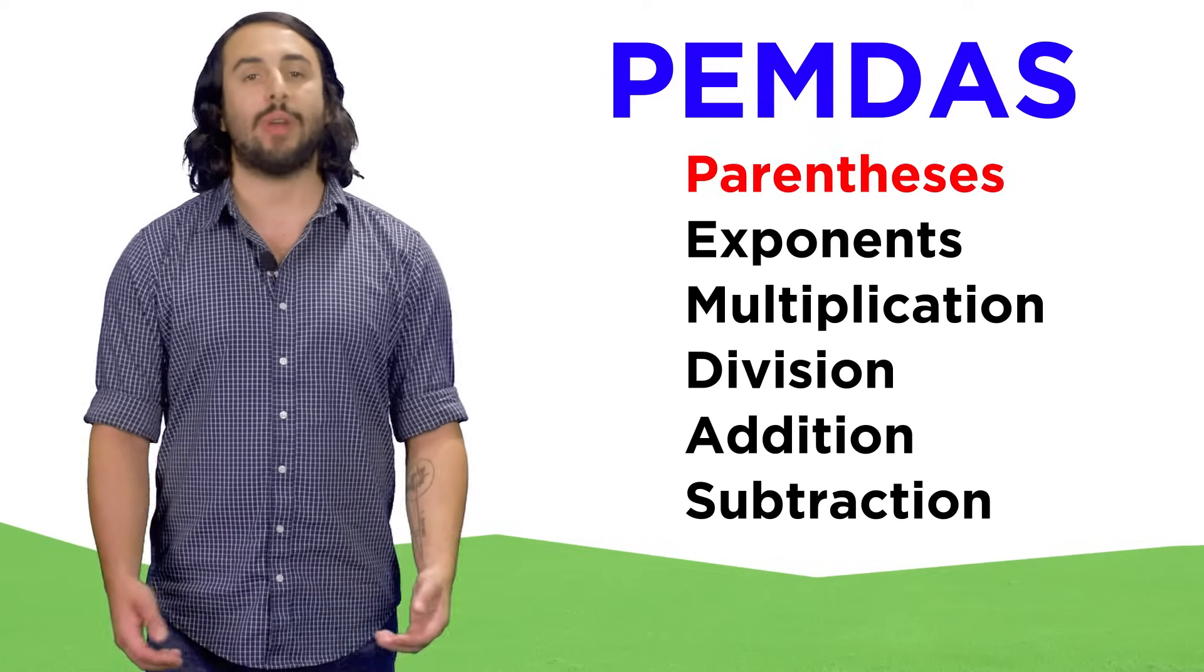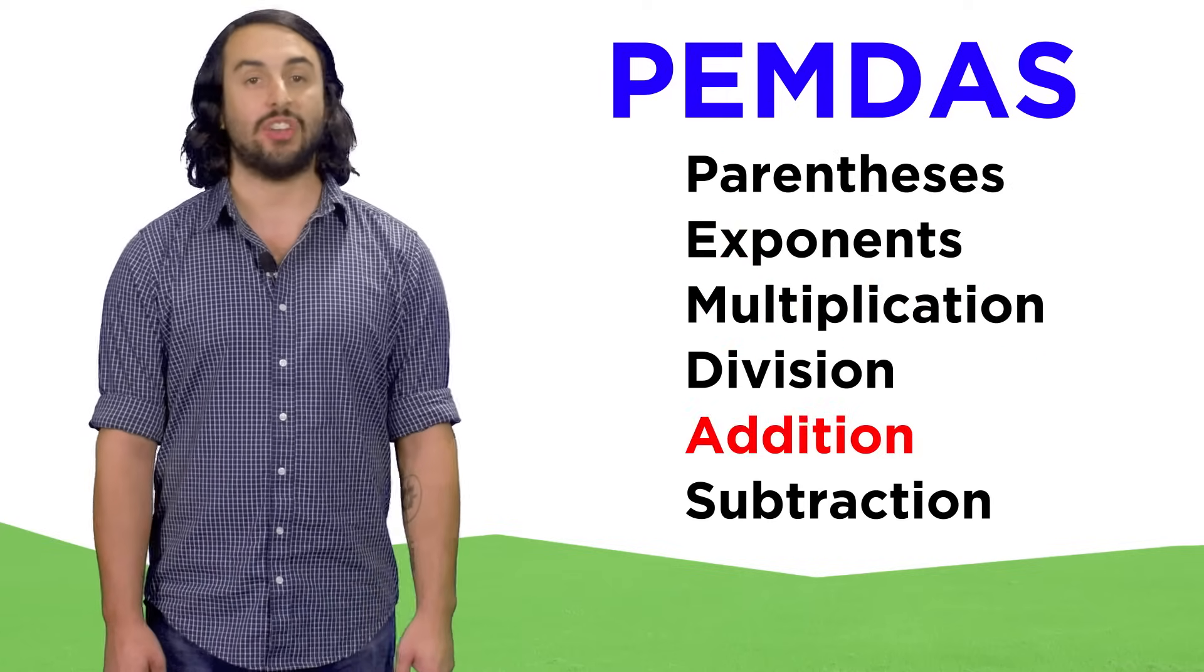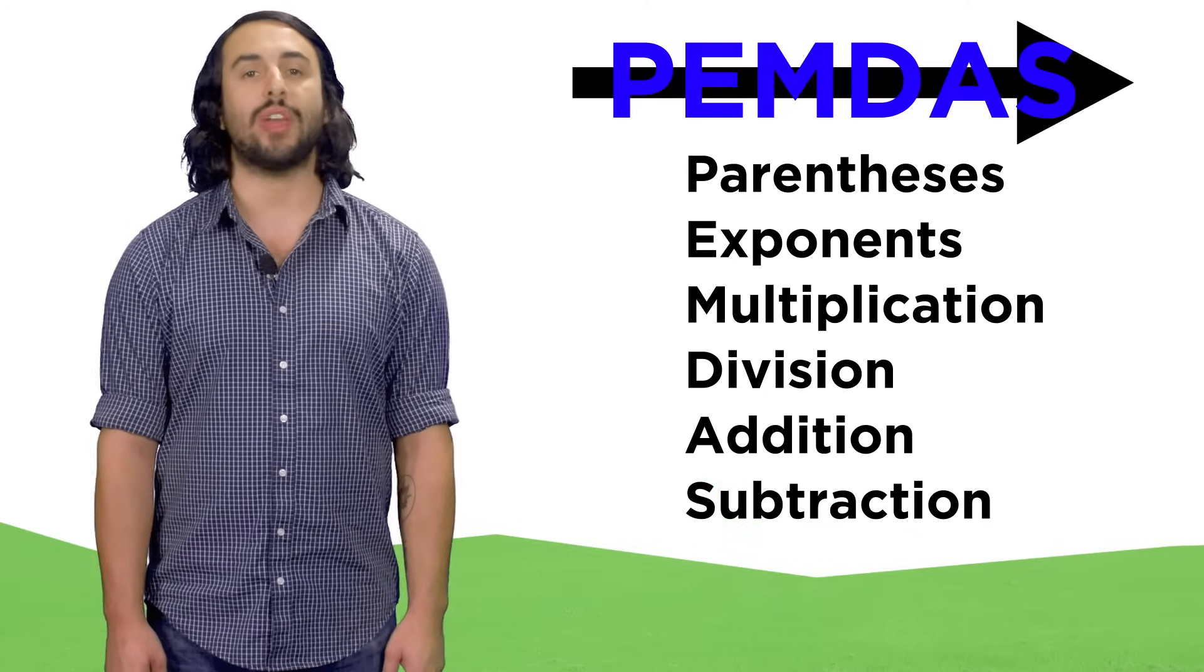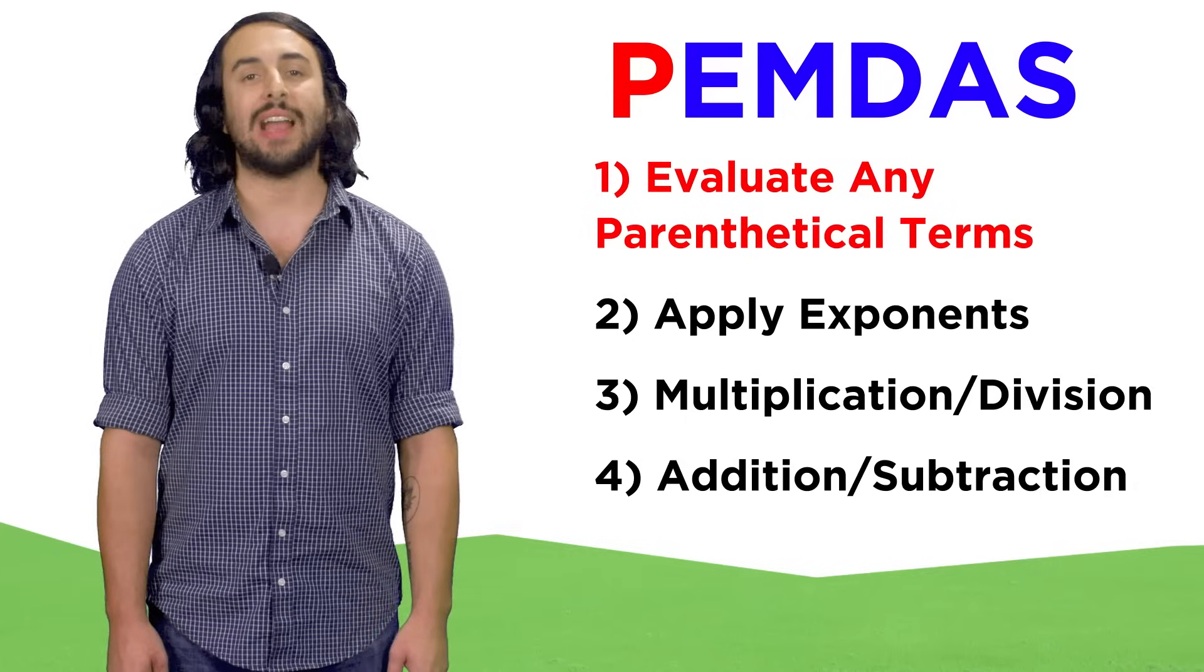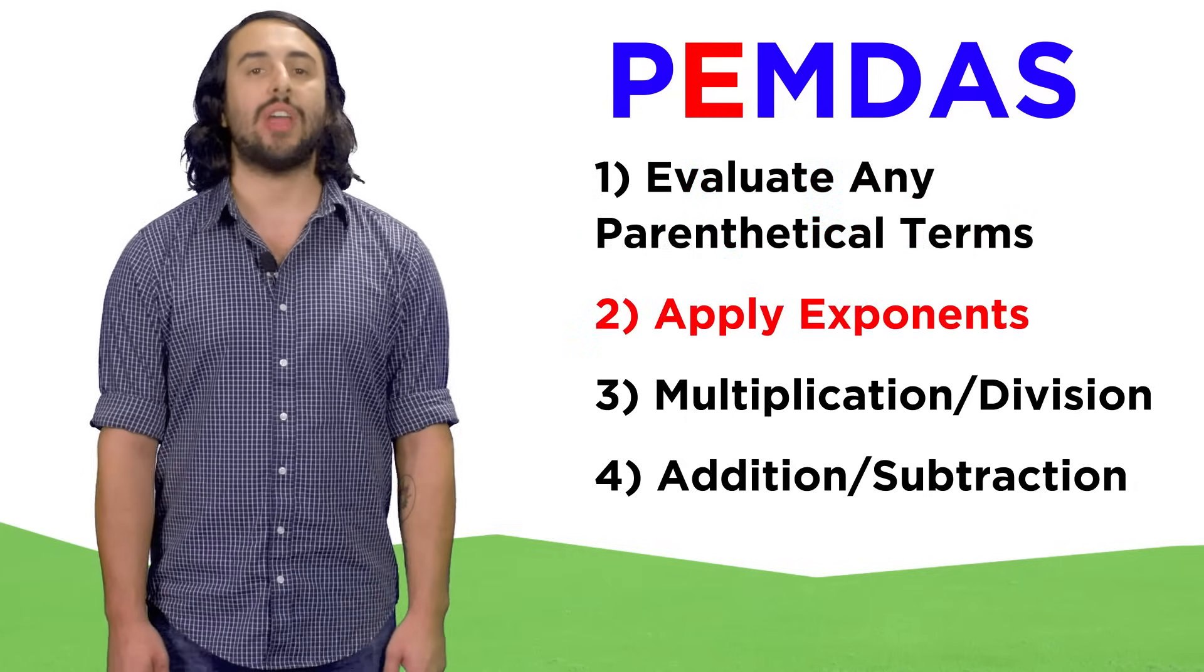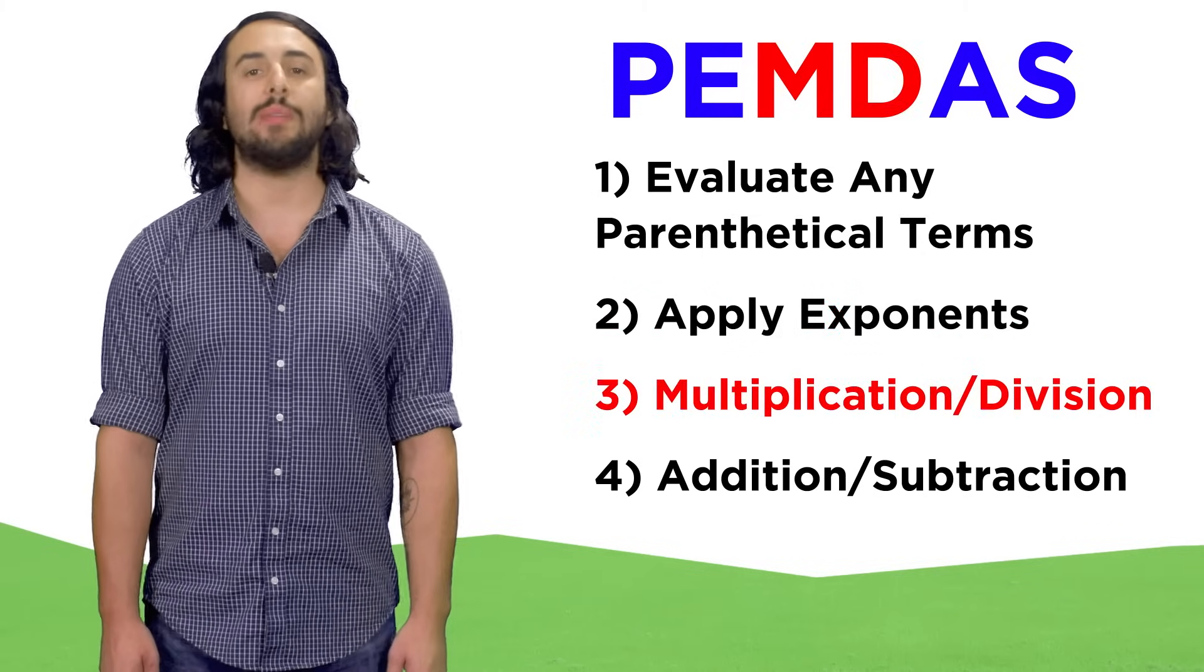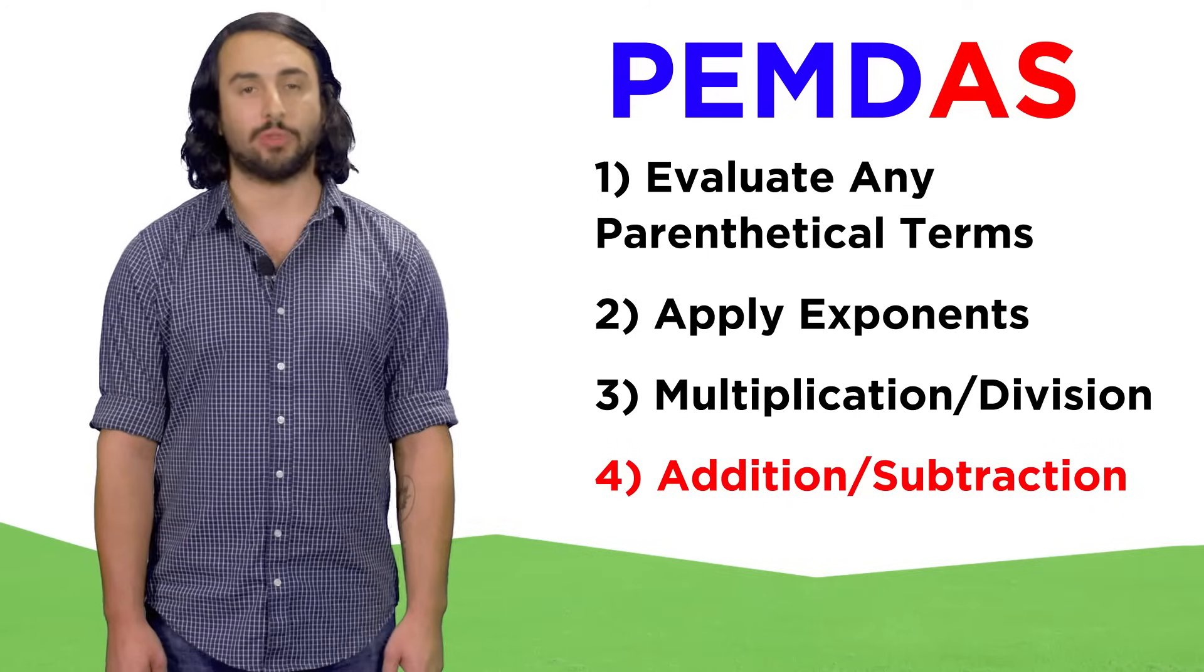It stands for parentheses, exponents, multiplication, division, addition, and subtraction. This tells us the order that we do things, from left to right. First we perform any operations found within parentheses. Then we apply any exponents that are present. Then we do any multiplication and division. And lastly, we do addition and subtraction.